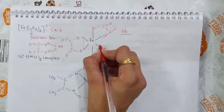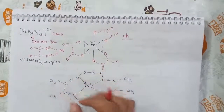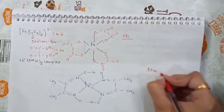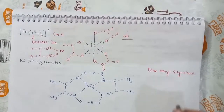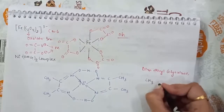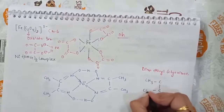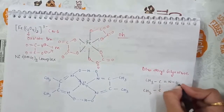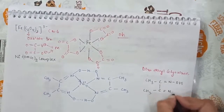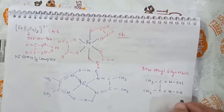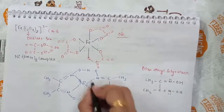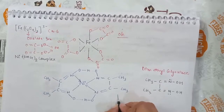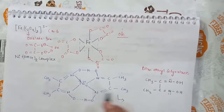Another example is the nickel-DMG complex, where DMG stands for dimethylglyoxime. The donor atom in DMG is nitrogen, and through nitrogen it coordinates to the given metal. This is a chelate complex used in quantitative analysis, and the presence of chelation confirms its stability.